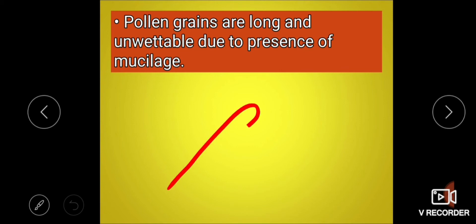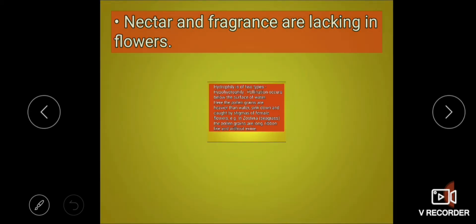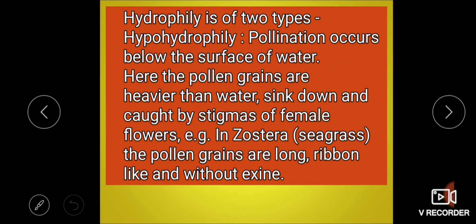Pollen grains in hydrophilous plants are long and unwettable due to the presence of mucilage coating. Nectar and fragrance are lacking in these flowers. Hydrophily is of two types: hypohydrophily — where 'hypo' means below — when pollination occurs below the surface of water. Here, pollen grains are heavier, so they sink down and are caught by the stigma of flowers.